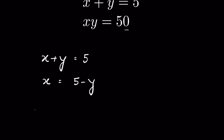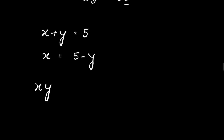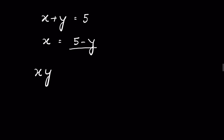From x times y, let's put the value of x into this equation. So x times y is equal to 50, and x is 5 minus y, so 5 minus y times y is equal to 50.